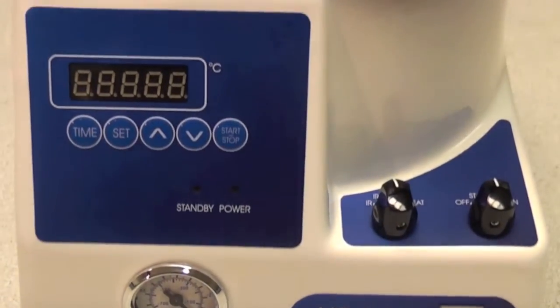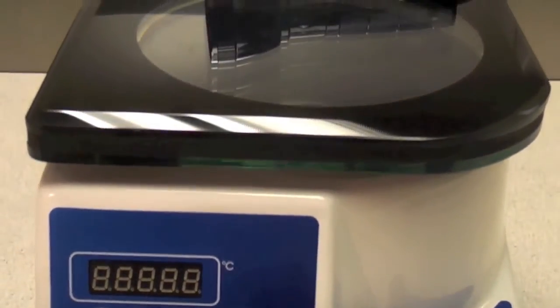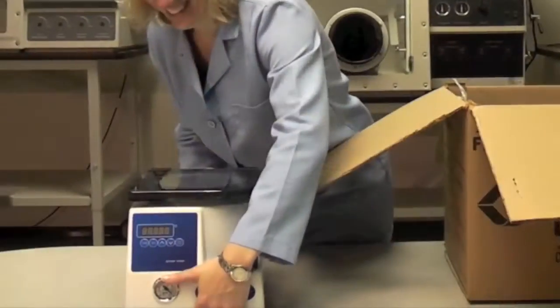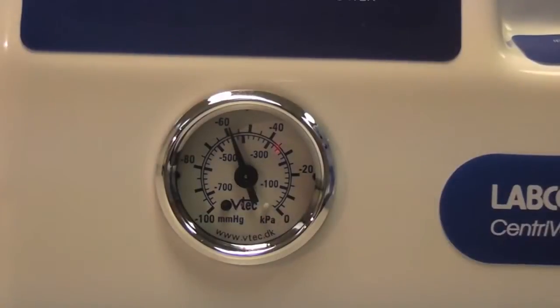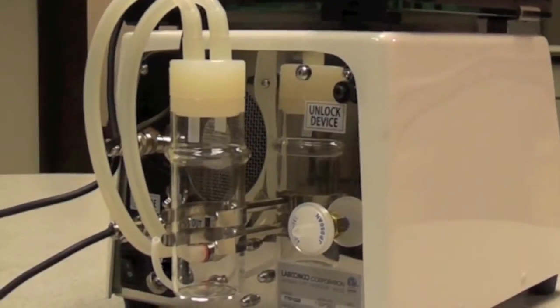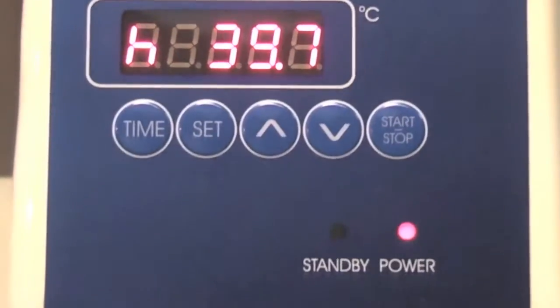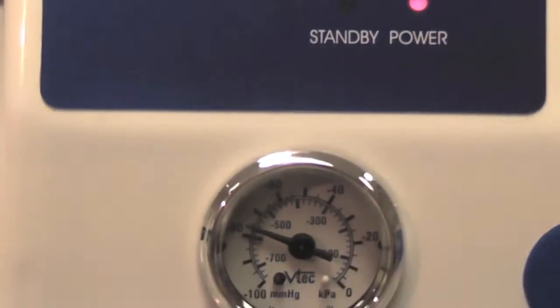The CentriVap Micro-IR includes everything you need in one handy package: concentrator, rotor, strobe light, vacuum pump, and glass trap, yet weighs less than 20 pounds. Just plug it in and you're ready to start evaporating.